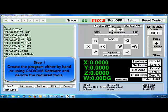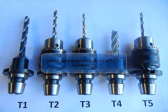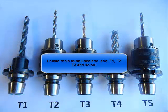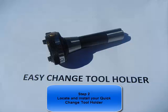Step 1. Create the program either by hand or using a CAD-CAM software and denote the required tools. Identify tools to be used and label them T1, T2, T3, and so on.